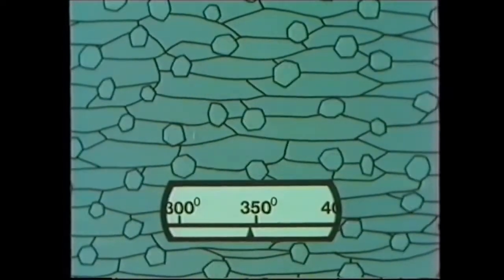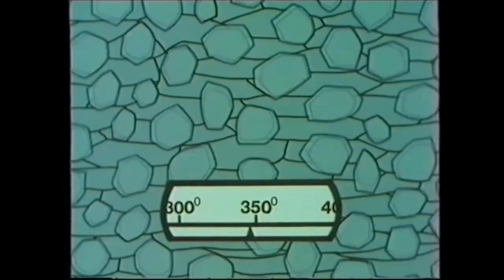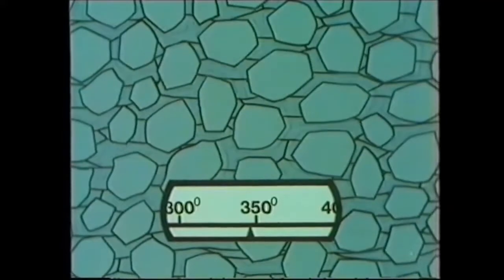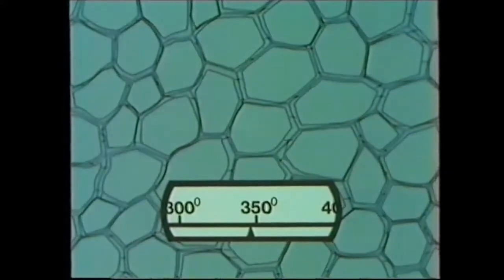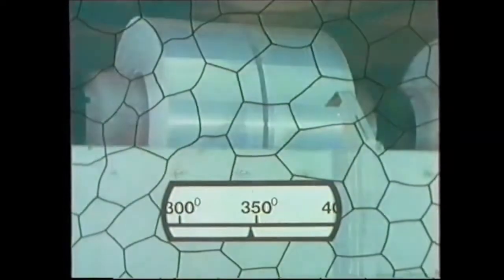Now, at the grain boundaries, new grains begin to form. These grow rapidly until a new, undistorted grain structure completely replaces the old, distorted one. We call this process recrystallization.